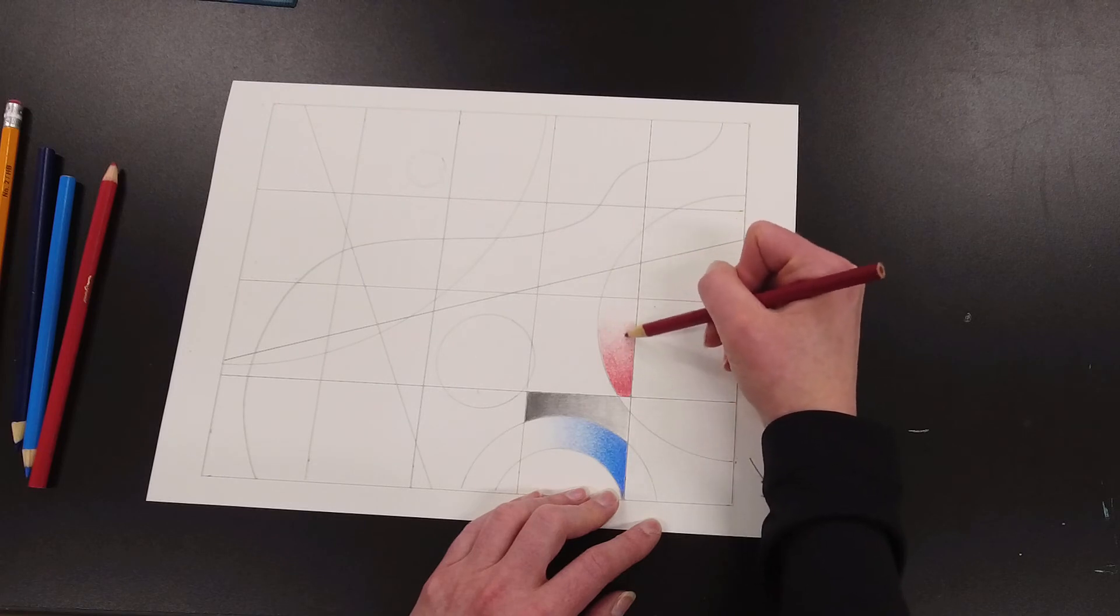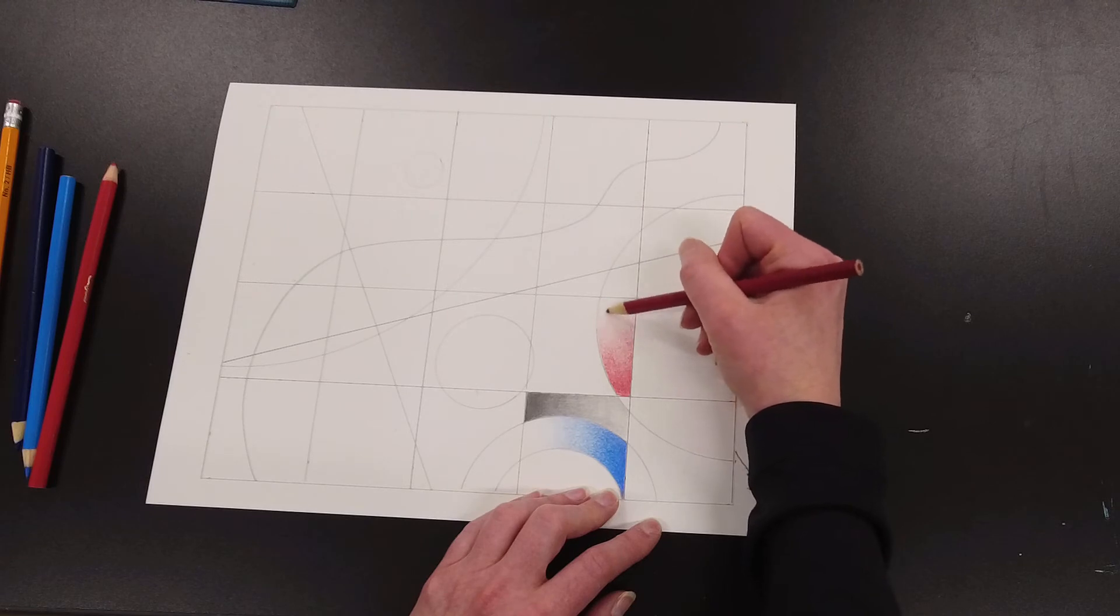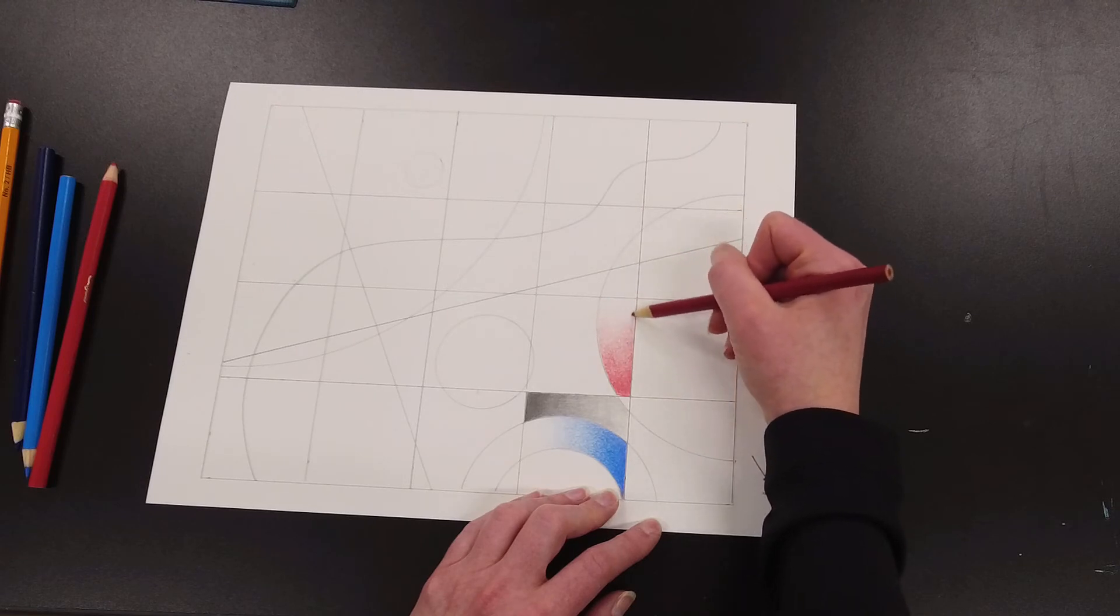So now I'm barely pressing down at all, just smoothing out the slight little bit of value that is already there right before I get back to white.